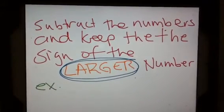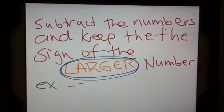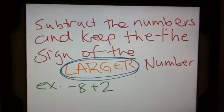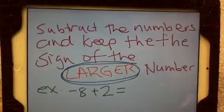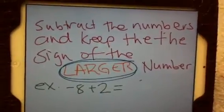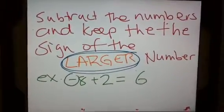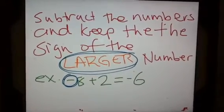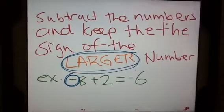For example, if I had negative 8 plus 2, I find the difference. What is the difference between 8 and 2? The difference is 8. I keep the sign of the larger number — the larger number is 8, so I keep that sign.